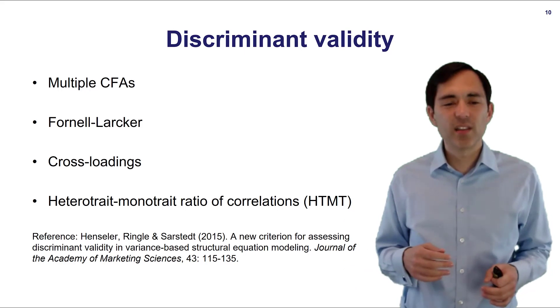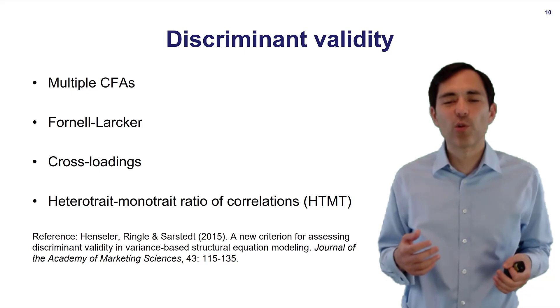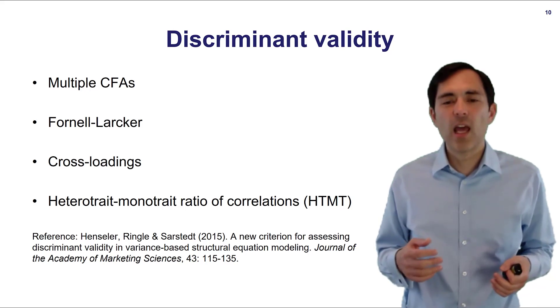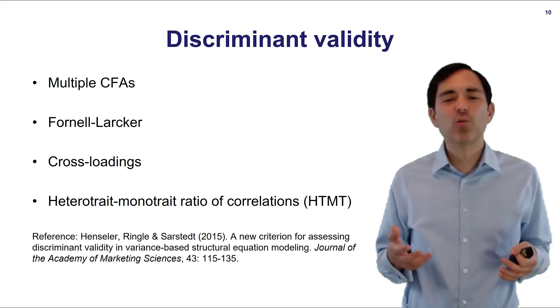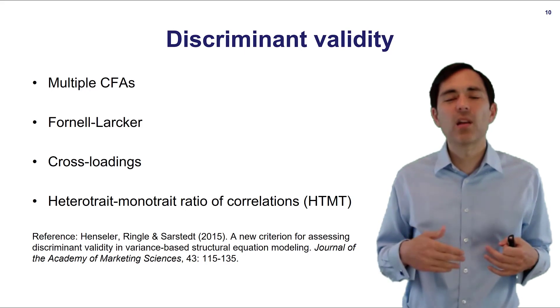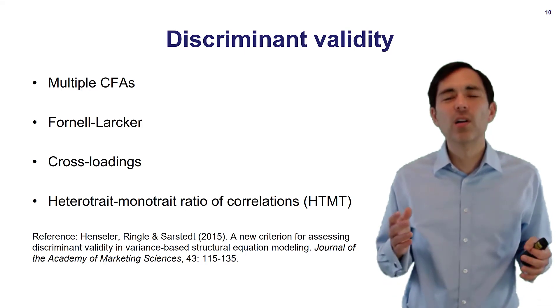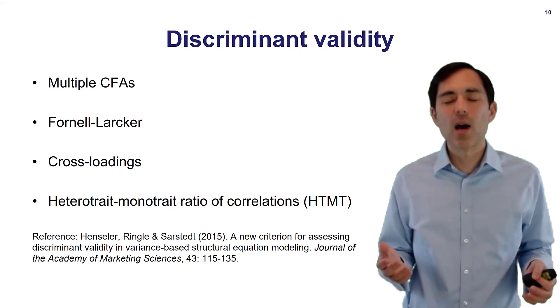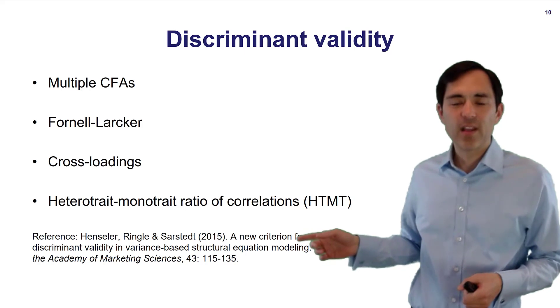In recent years also we have new methods it's heterotrait monotrait ratio of correlations or HTMT and it looks also at items correlations within its factors compared to correlations with items outside the original proposed factors and they compute a ratio. This has been proposed by a group of authors more used in information systems research and maybe marketing. At the bottom you find a reference to an article that explains HTMT.